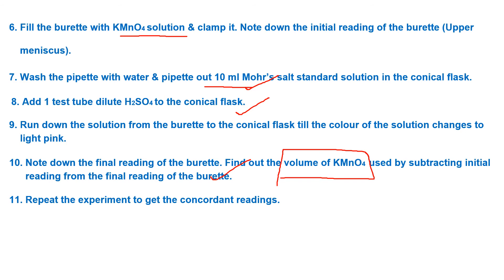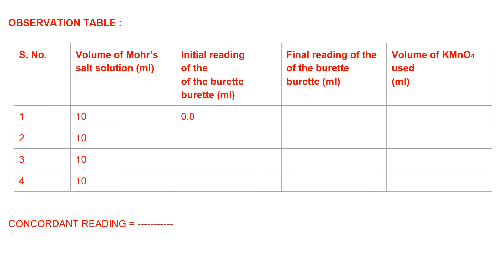Repeat the experiment to get concordant readings. The observation table is drawn on the left hand side unruled page, just opposite the procedure. Volume of Mohr salt solution for every set is 10 ml. Record the initial and final burette readings and calculate the volume of KMnO4 used by subtraction. You do not need to refill the burette to zero each time — continue from where you left off. Carry out at least 3 sets, and when you get two concordant readings you can be confident you are working correctly.